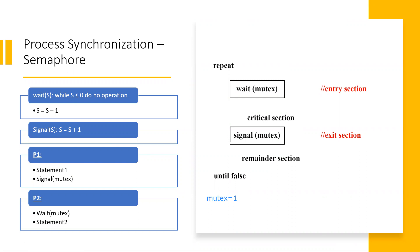Semaphore is a tool that synchronizes the processes. It is nothing but a kind of variable which helps us to sync the processes. We have seen that the processes are realistic because the mutual exclusion value is 0, then P2 cannot execute before P1. Once P1 is executed, the signal function increments the value to 1, showing that the critical section is freely available. So the wait function allows the next process to execute.